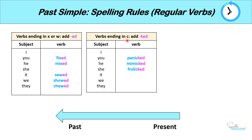Verbs that end in C, we add KED. Now there are not many verbs that end in C, but some examples would be panic, which becomes panicked; mimic becomes mimicked; frolic becomes frolicked.